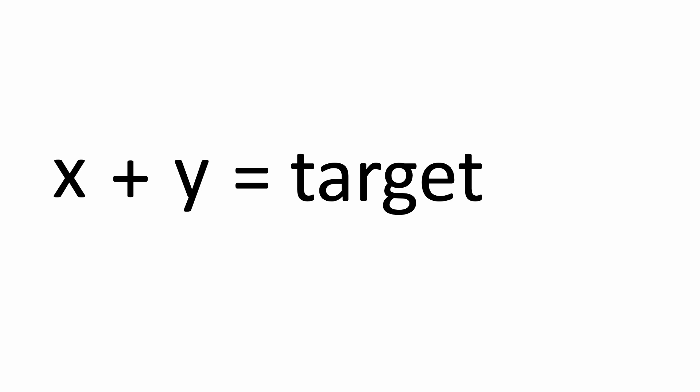In other words, instead of thinking of it as x plus y equals target, and trying every single combination of x and y, because we already know what the target is, for any given number x, there is only one other number y that satisfies this equation, and that number will be target minus x.